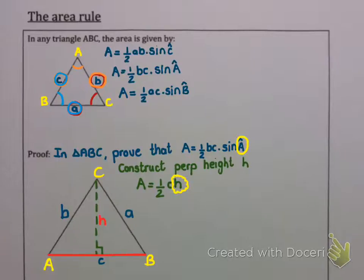Well if you look, the proof we're trying to do is a half BC sine A. So we've got the half and we've got the C, but where do the B and the sine A come in? Well, sine of angle A, angle A is in a right angle triangle. And the definition of sine is opposite divided by hypotenuse. So sine of angle A will be H divided by B.